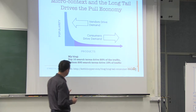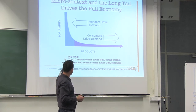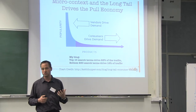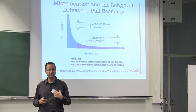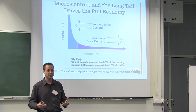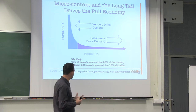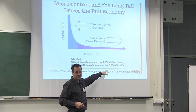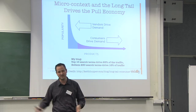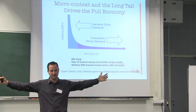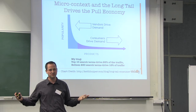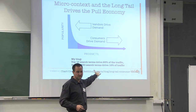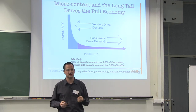A good example: on my blog, the top 10 Google search terms drive one quarter of the traffic. You might think you can just focus on those 10 terms. But the bottom 250 search terms drive 18% of the traffic — a huge chunk I wouldn't even look at, yet they're driving nearly 20% of the traffic.